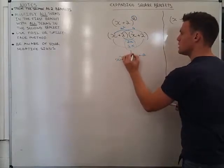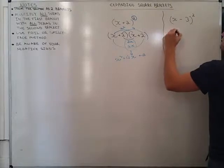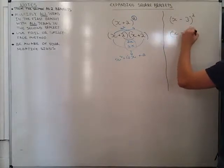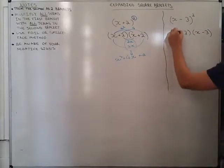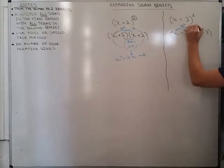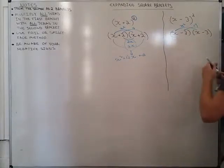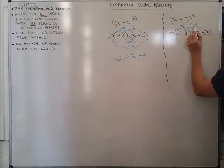In this one here, I can do exactly the same thing. I can expand this, so that's x minus 3, x minus 3. And again, use my smiley face method. x times x is x squared. Minus 3 times minus 3 is positive 9. Please bear in mind, I'm paying attention to my negatives here, so that's why I get a positive there.